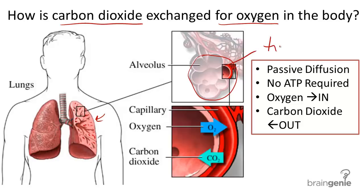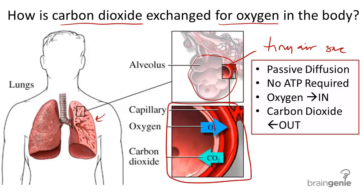Alveoli are those tiny air sacs. Here's a blown up picture of one of these alveoli. You can see the thin walls of alveoli and the thin wall of a capillary, the smallest blood vessels in the body. Our body makes it extremely easy to take in oxygen, which you took in through your mouth, trachea and so on, and to let the carbon dioxide waste exit the body.